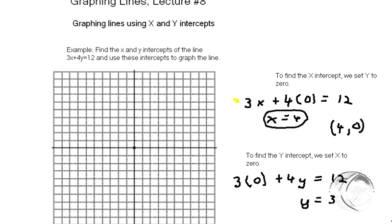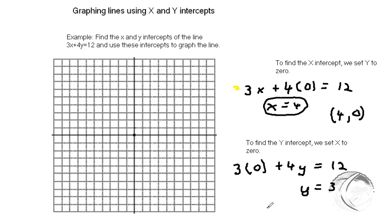And again, I write this as an ordered pair. What am I setting? X is zero this time, and y is 3.